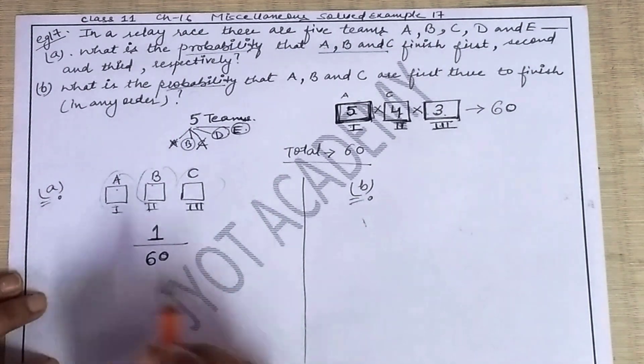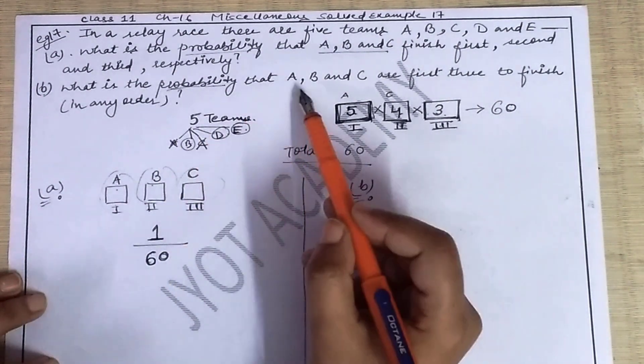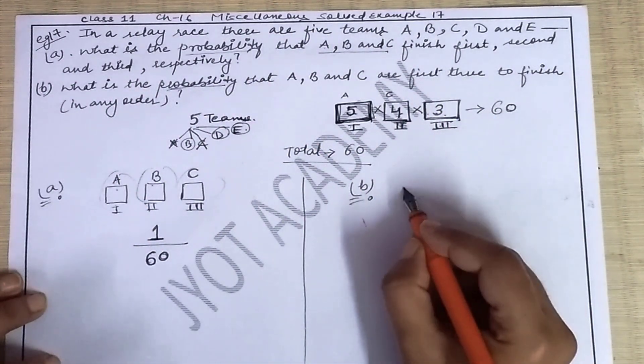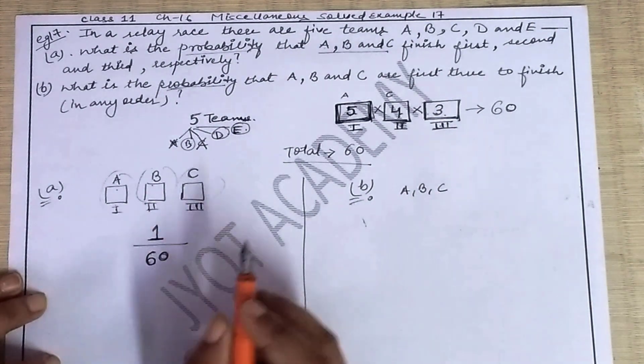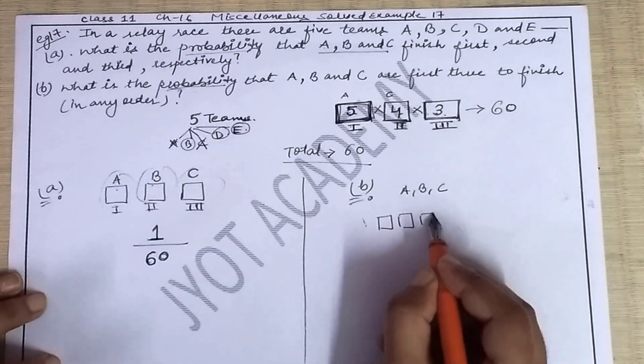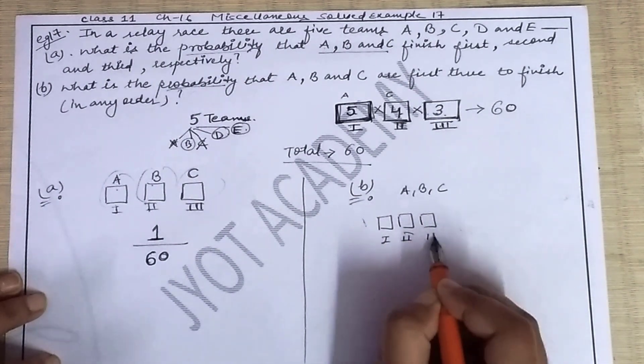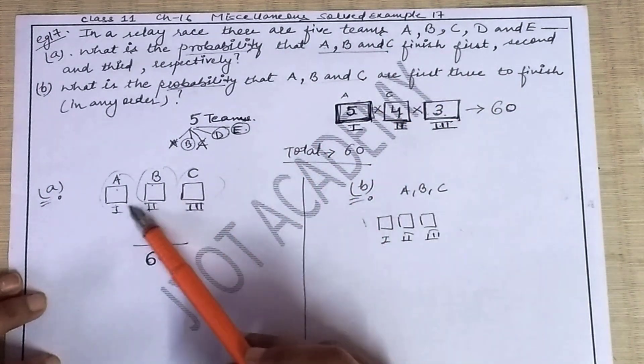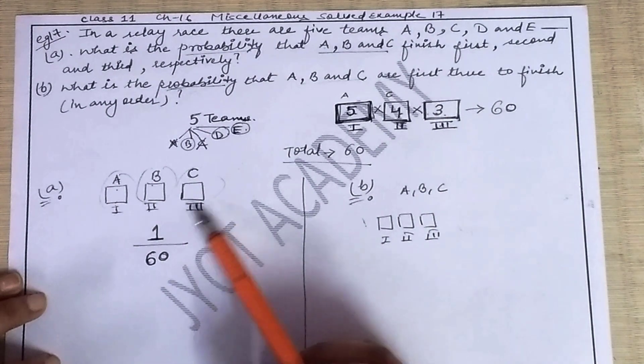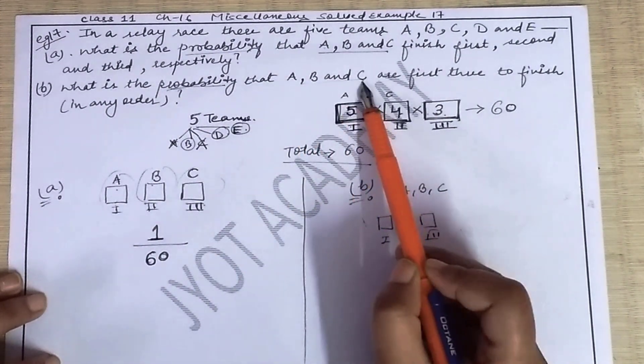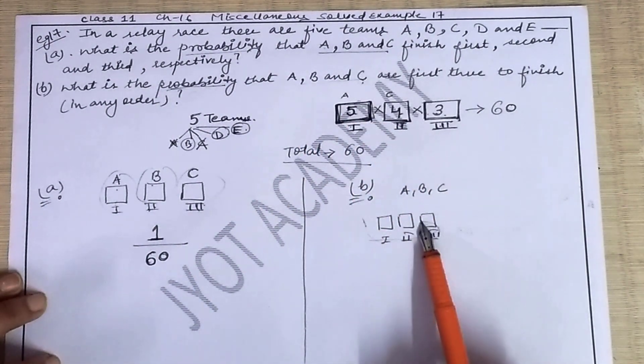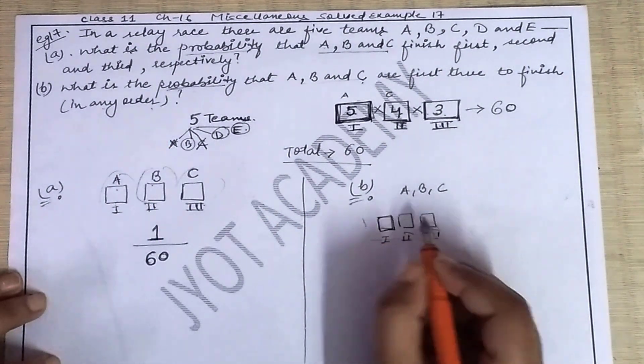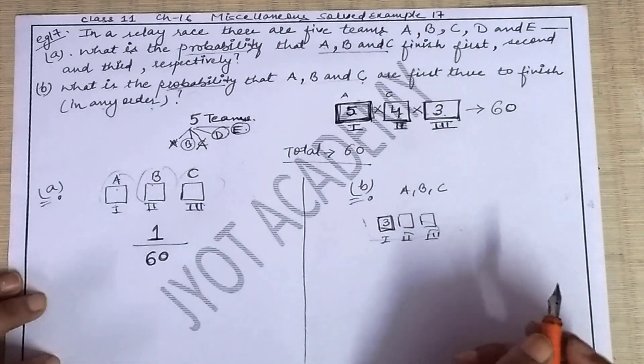Now let's see part B. What is the probability that A, B, C are first three to finish in any order? We have three teams: A, B, C. We have three positions: first, second, and third. But there it was fixed - first, second, third for A, B, C in that order. Here A, B, C are there for the first three positions, but they can come in any order.